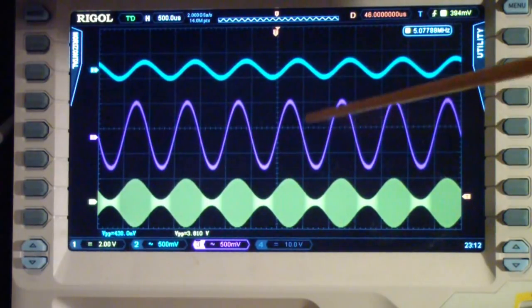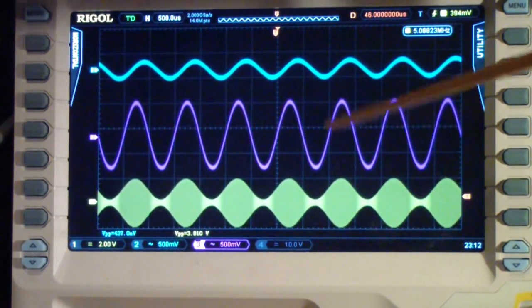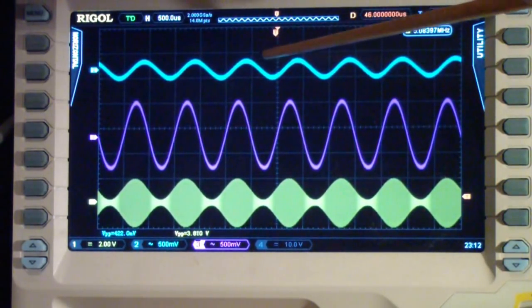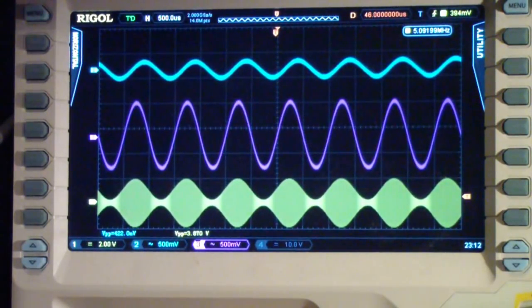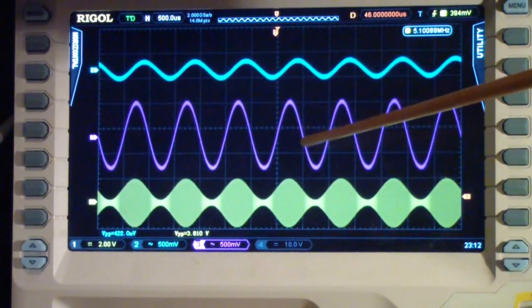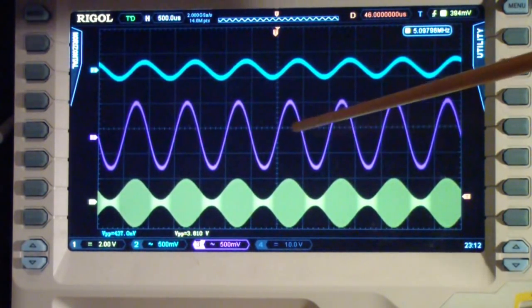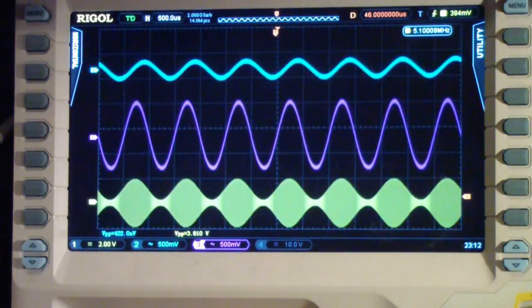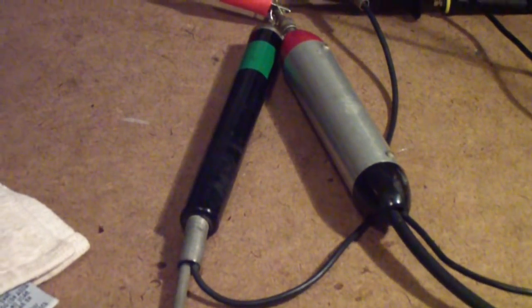This is the signal from the probe that I called the dinosaur bone, which is actually the Heathkit, and the sensitivity of the scope is set to the same 500 millivolts per division for both of these channels. So you'll notice that the Heathkit probe produces a signal that's about almost three times as much as the ICO probe, and when we look at the schematic we may see a reason why that's true. But basically these are two probes of the day that were commonly used.